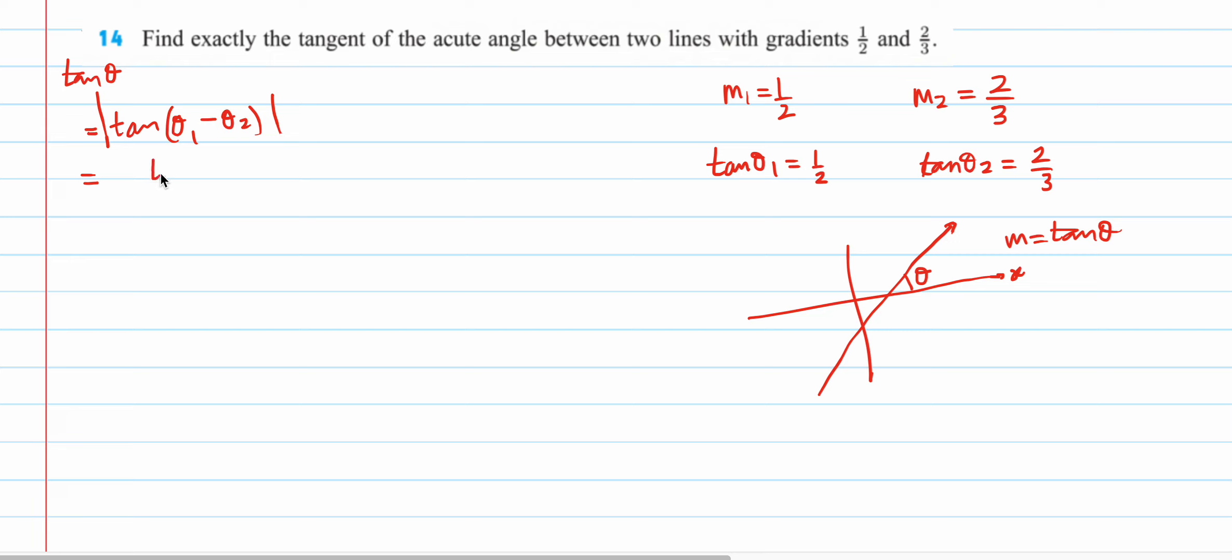Again you forgot. So, tan theta one minus tan theta two upon one plus tan theta one. It says compound angle. Then how is modulus coming into picture? Modulus, basically, you have to just ignore the sign. In the end, whatever answer you get, if it's negative, make it positive.